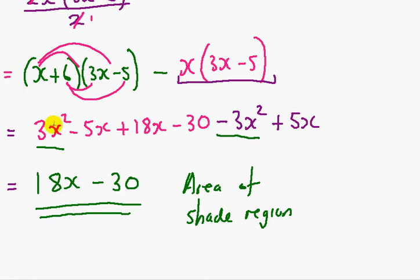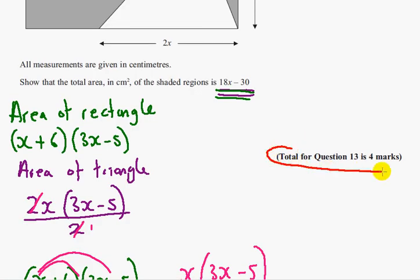So just to clarify. This 3x squared cancels out with this minus 3x squared. Minus 5x cancels out with positive 5x. And we've got 18x minus 30. And that's it. So question 13 is worth 4 marks in total.